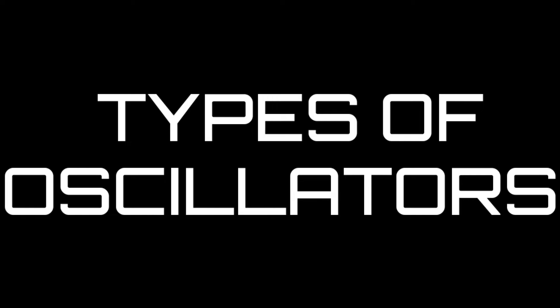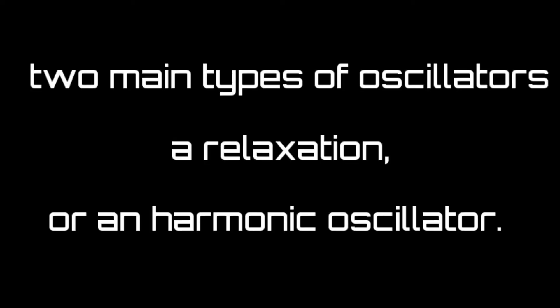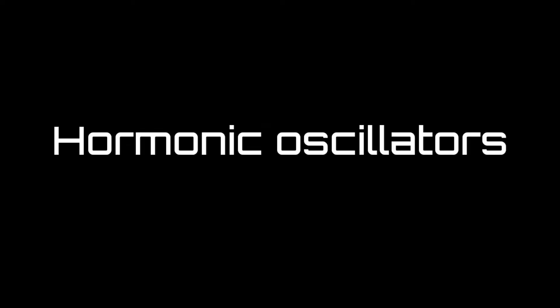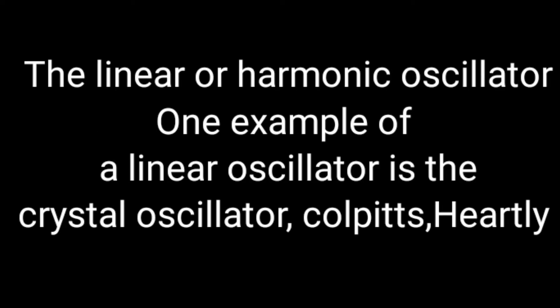There are different types of oscillators available. Out of that, two types are important: relaxation and harmonic oscillators. A relaxation oscillator generates a triangular wave, square wave, etcetera, whereas harmonic oscillators will generate only sinusoidal waveforms like crystal oscillator, Colpitts, Hartley and so on.